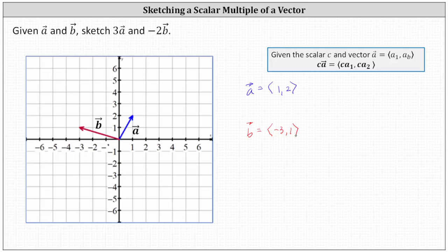The vector three times vector a will be three times as long as vector a, or have three times the magnitude, and point in the same direction. Graphically, one way to sketch three times vector a is to start at the origin and then move right one and up two, three times. This gives us the terminal point, and this black vector is the vector three times vector a.